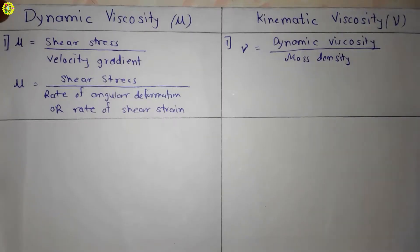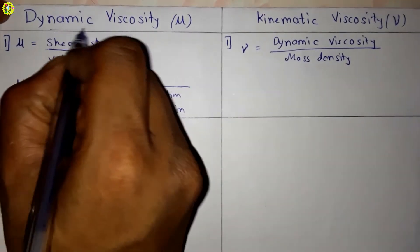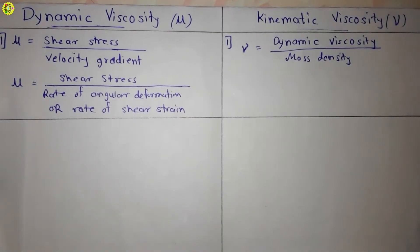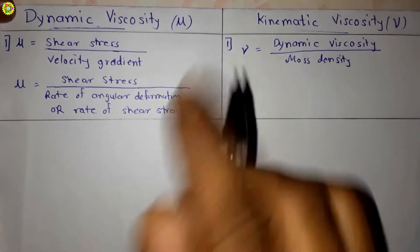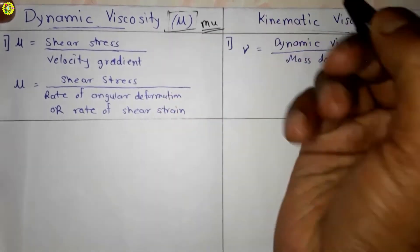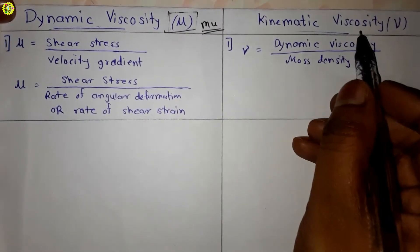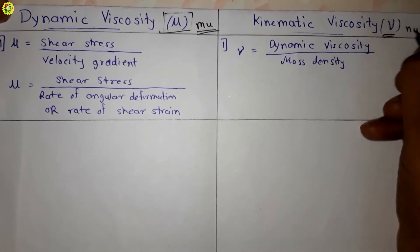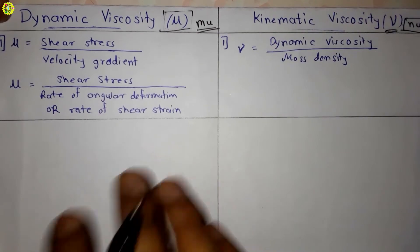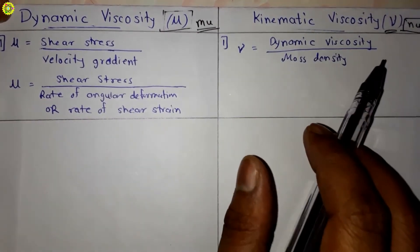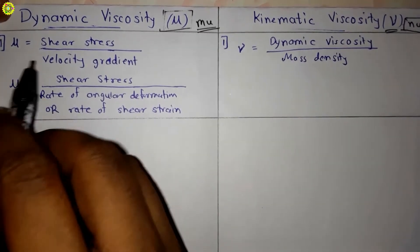Hi students, welcome. In this video we will study about the difference between dynamic viscosity and kinematic viscosity. Dynamic viscosity is represented by the symbol mu (μ), and kinematic viscosity is denoted by the symbol nu (ν).